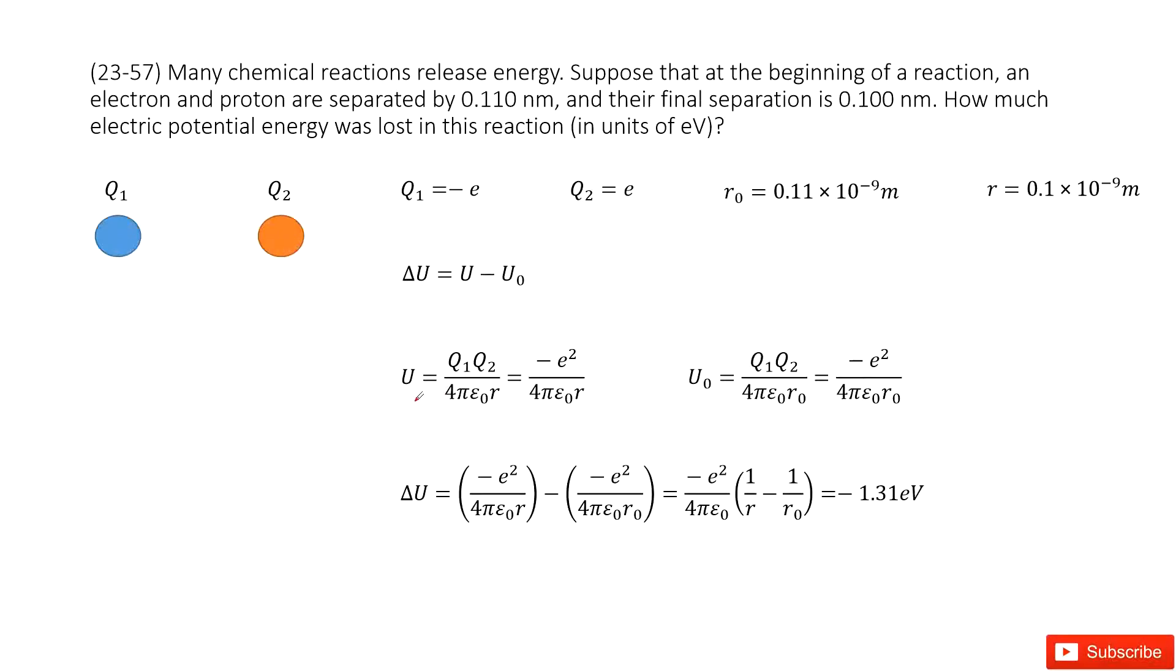So easy. So in the final, we can say we use the charge 1 times charge 2 divided by 4 pi epsilon naught R. R is the distance between Q1 and Q2. And then input Q1, Q2 inside, we get a function look like this one.